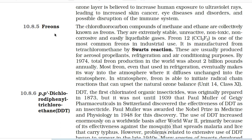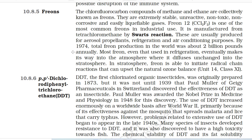10.8.5 Freons: The chlorofluorocarbon compounds of methane and ethane are collectively known as freons. They are extremely stable, unreactive, non-toxic, non-corrosive, and easily liquefiable gases. Freon-12 (CCl2F2) is one of the most common freons in industrial use, manufactured from tetrachloromethane by the Swarts reaction. They are produced for aerosol propellants, refrigeration, and air conditioning. By 1974, total freon production was about 2 billion pounds annually. Most freon eventually makes its way into the stratosphere, where it initiates radical chain reactions that upset the natural ozone balance.